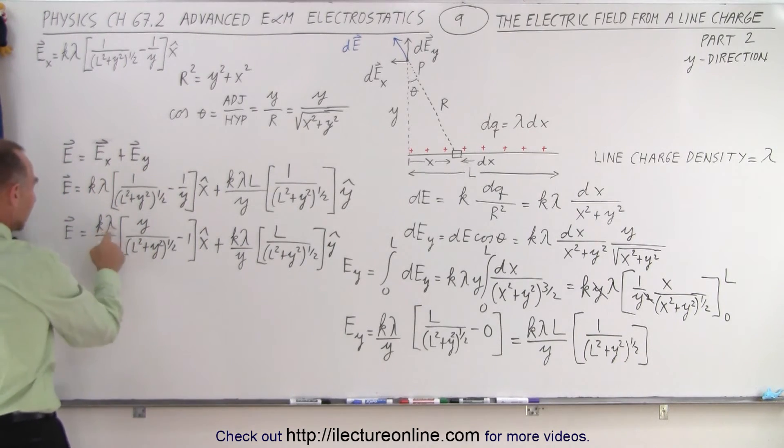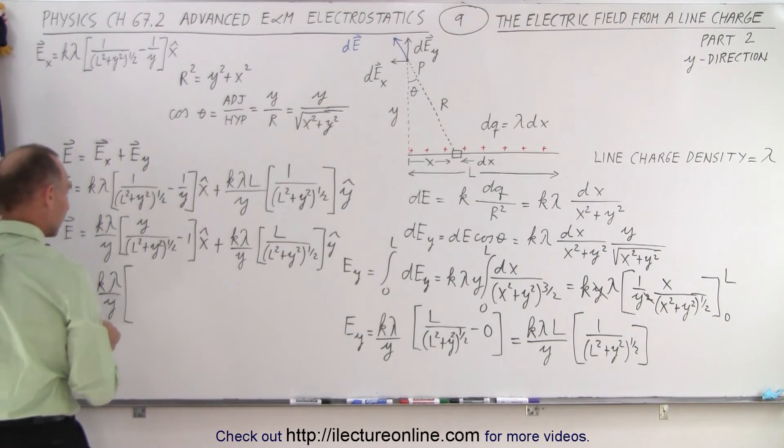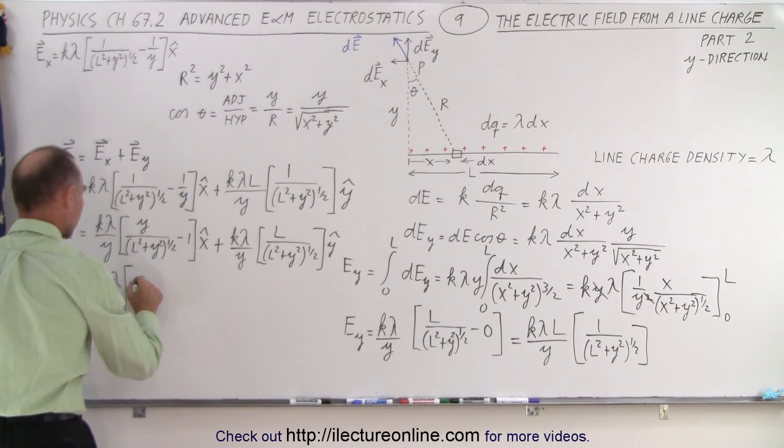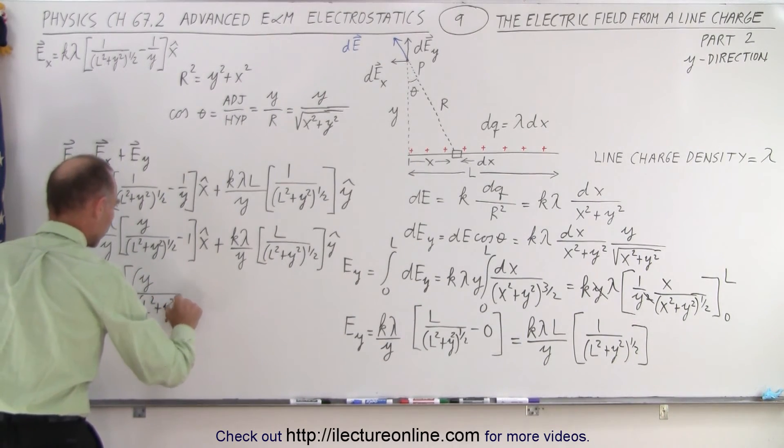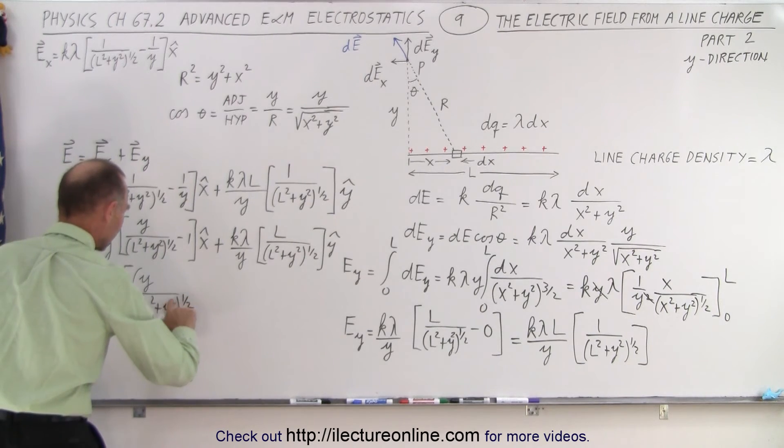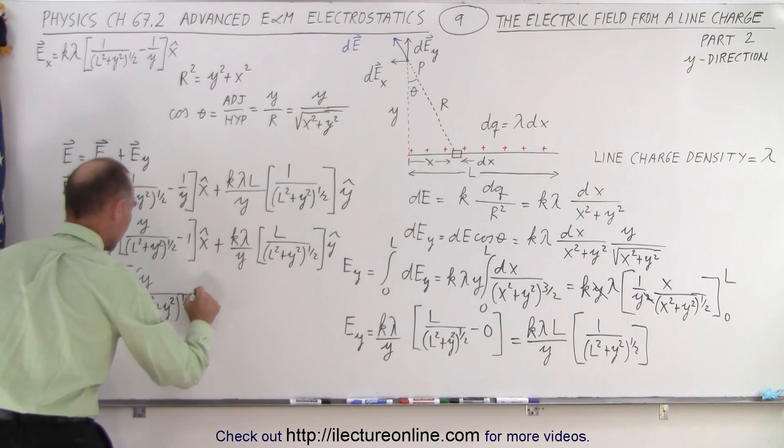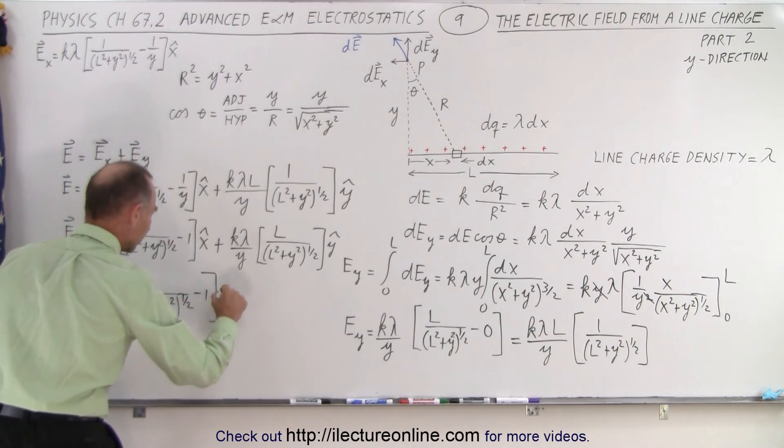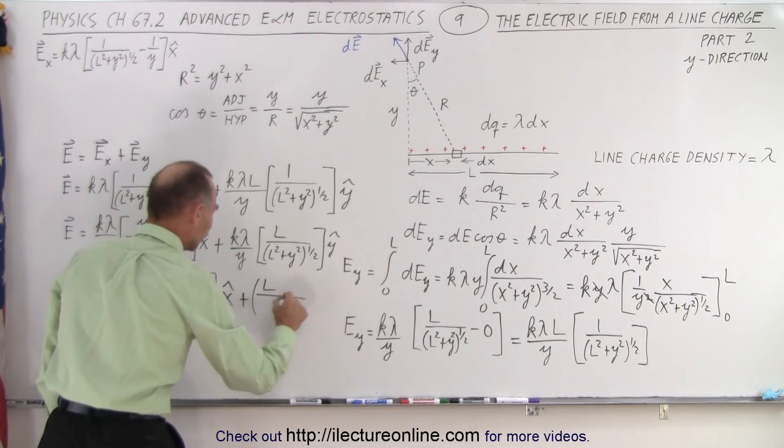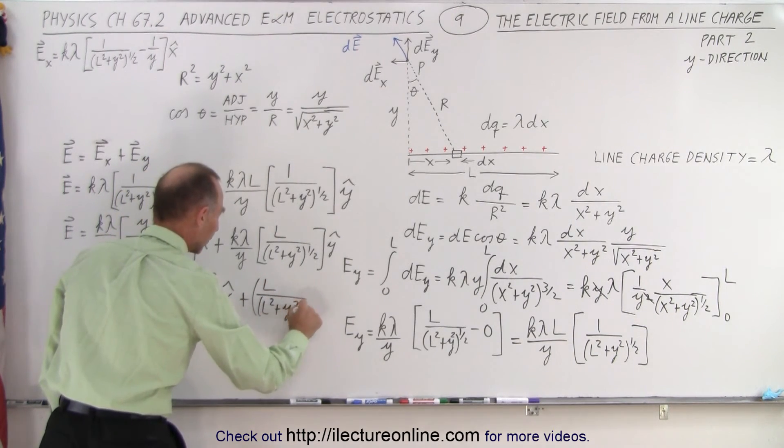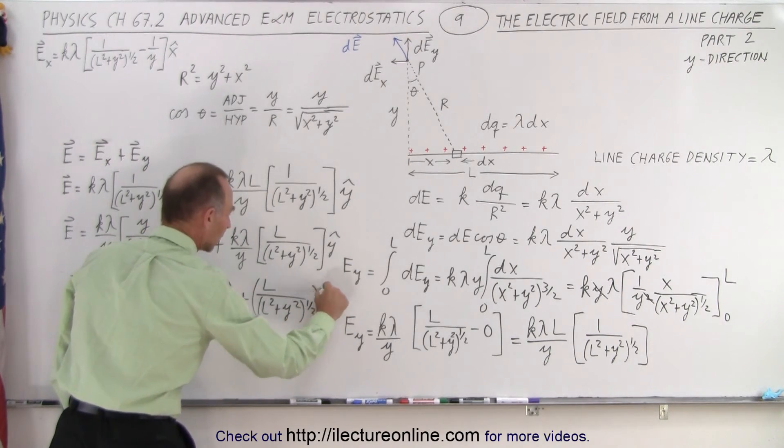And finally, I can factor out the k lambda y. So we have electric field is equal to k lambda over y times y over L squared plus y squared to the 1 half power, minus 1 in the x direction. And then we have plus L over L squared plus y squared to the 1 half power in the y direction.